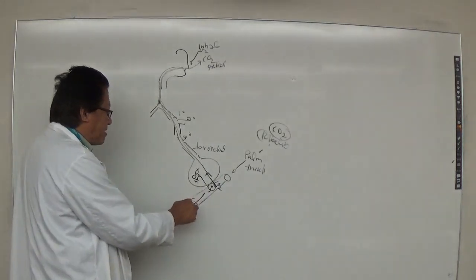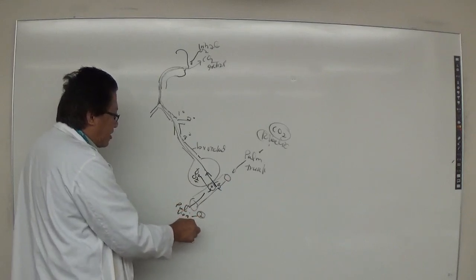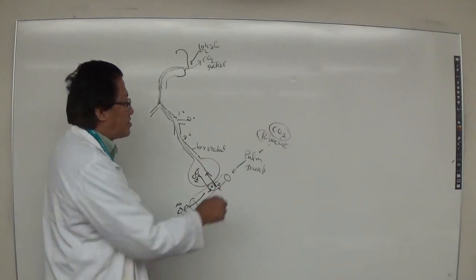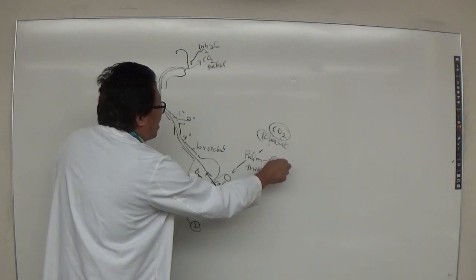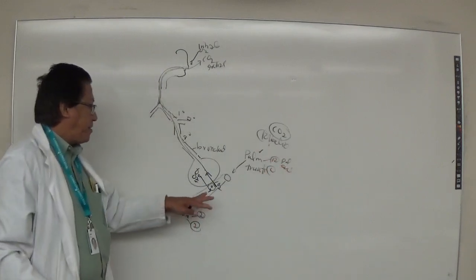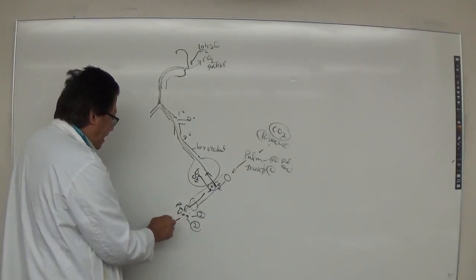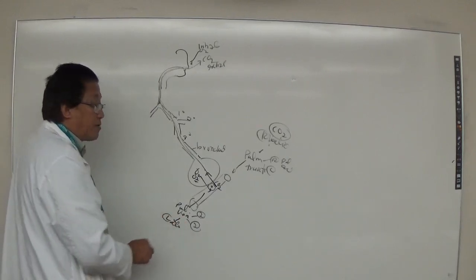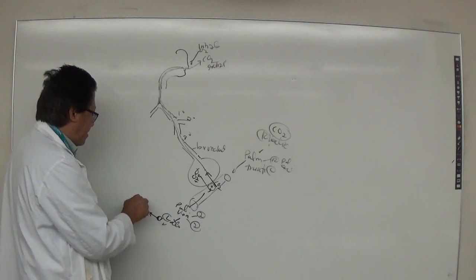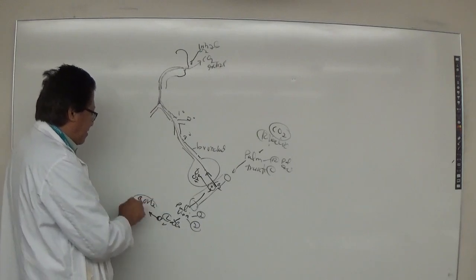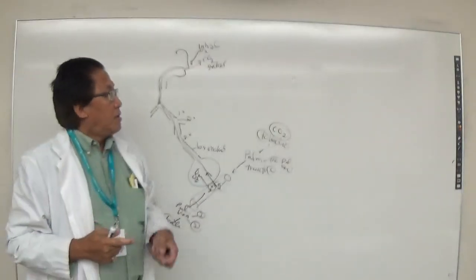Oxygen is carried by red blood cells to the pulmonary veins — two from the right lung and two from the left lung. From the lung, the pulmonary veins bring the oxygenated blood to the left atrium, then the left ventricle, and then into the aorta to be transported throughout the body.